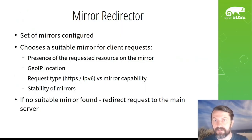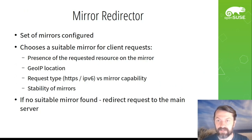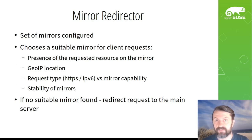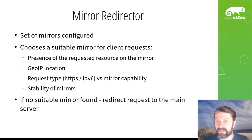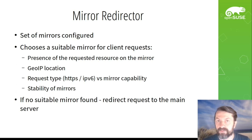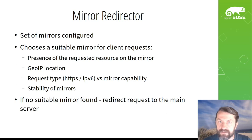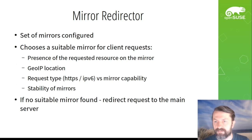Mirror Cache is a Mirror Redirector. It has a list of mirrors configured and accepts client requests, and for each request it tries to find a suitable mirror. It should consider several aspects when selecting a suitable mirror. First of all, it must be sure that the mirror has the requested resource, and it should consider geographical location so the mirror is as close to the client as possible.